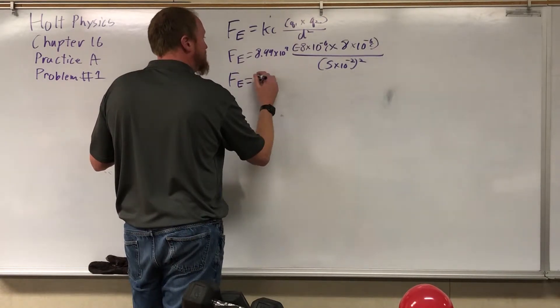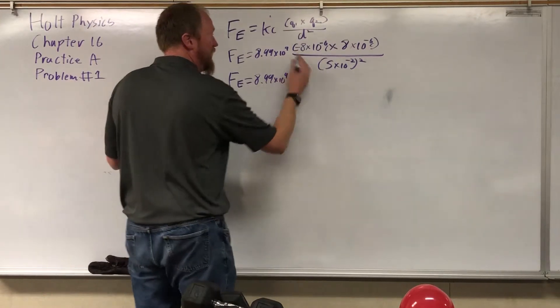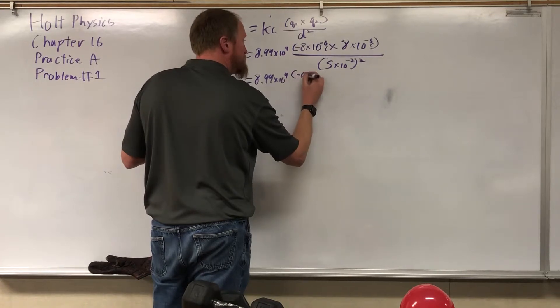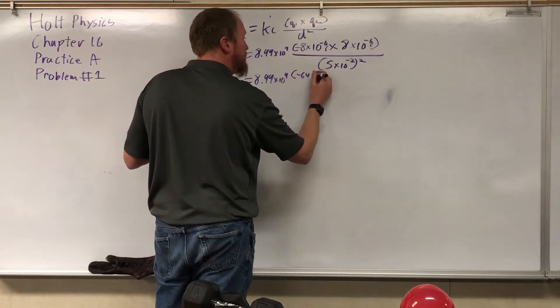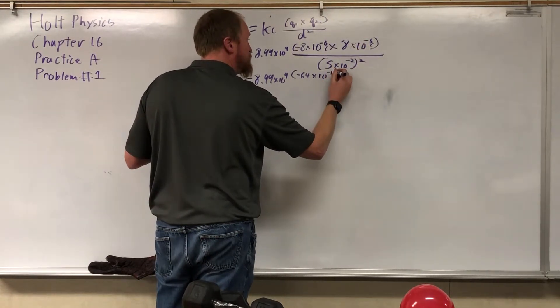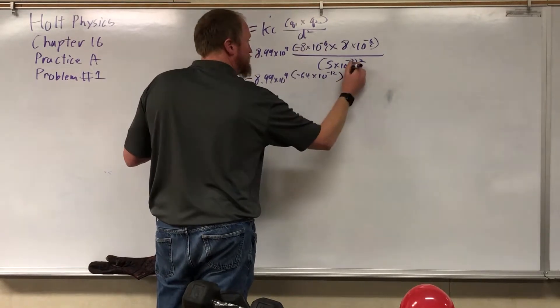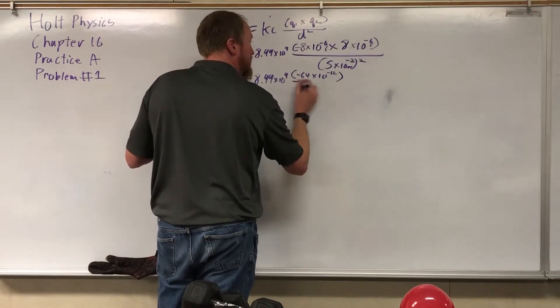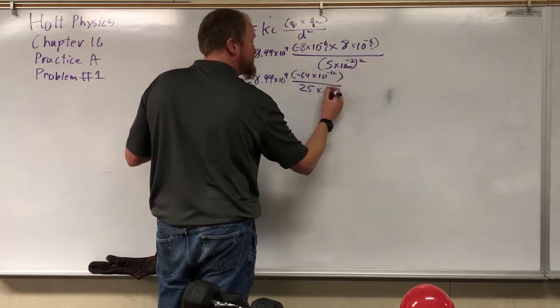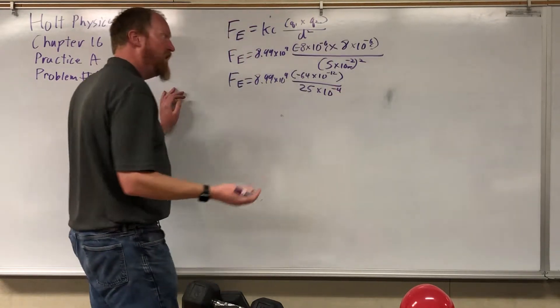Force electric is equal to Coulomb's constant, just bring it down, negative eight times eight is negative 64 times 10 to the negative six times 10 to the negative six is 10 to the negative 12 Coulombs. I won't worry about the units anymore. Five squared is 25. 10 to the negative second squared is 10 to the negative four.